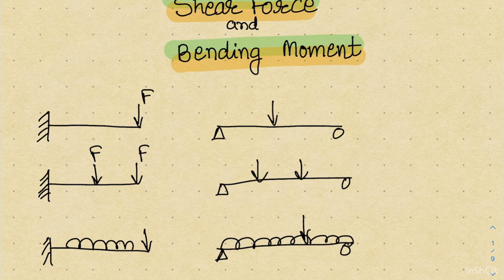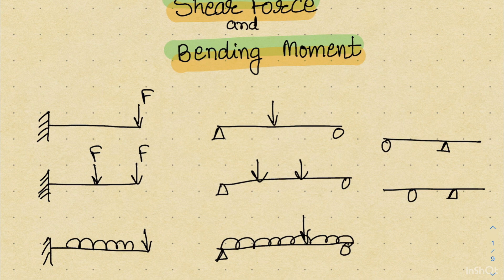In this session I am going to talk about cantilever and simply supported beams, but after that we will also talk about overhang beams — single side overhang and double side overhang. In the case of overhang beams, we will see the concept of sign changing of bending moment, or the point of contraflexure. All those things will be covered in the later sessions.